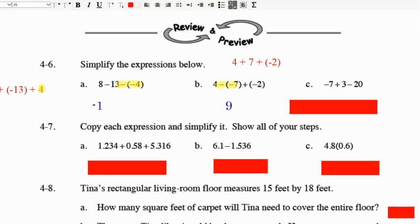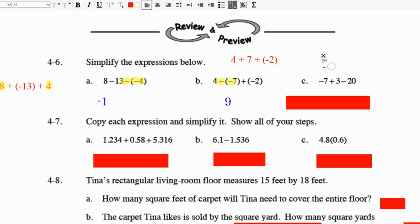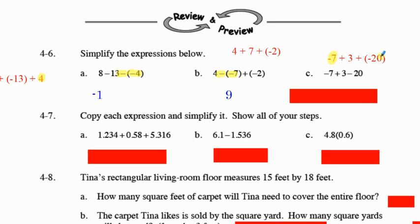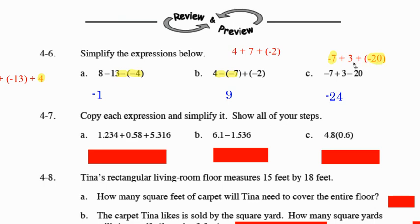Here you could do a rewrite: negative 7 plus 3. And instead of minus 20, you could think of that as adding a negative 20, since adding a negative is the same as subtracting. So we could combine our negative 7 with our negative 20 to get negative 27. 3 is positive, so it's the opposite — we subtract them. That gives us negative 24 because negative 27 is pulling more in a negative direction than 3 is in a positive direction.